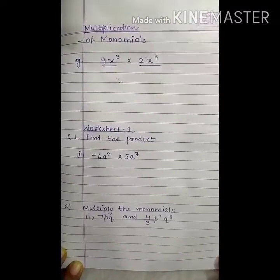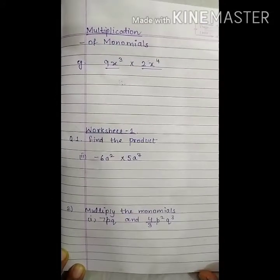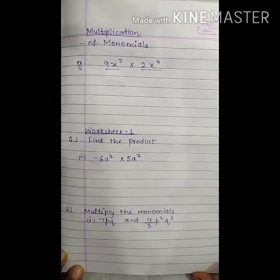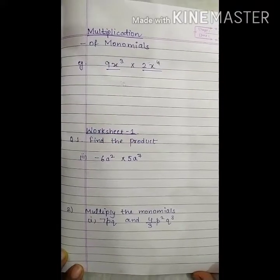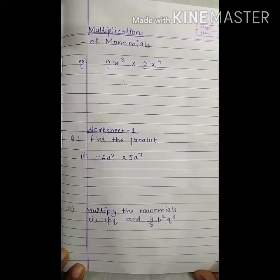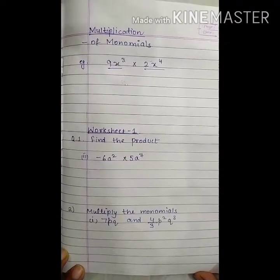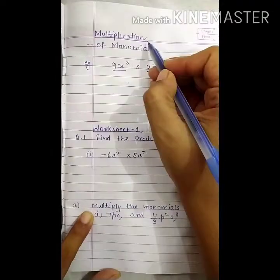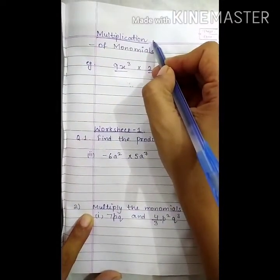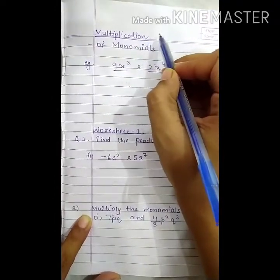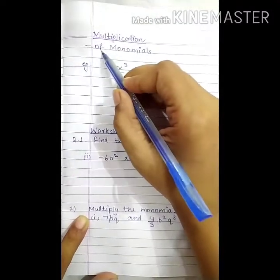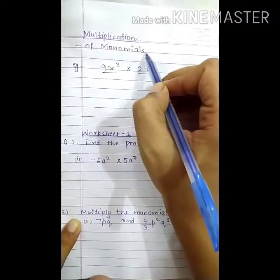And you already know how to add and subtract different types of algebraic expressions. You have done this in standard 6. So, now, we will learn multiplication of algebraic expressions. How we can multiply two expressions. First is multiplication of monomials.